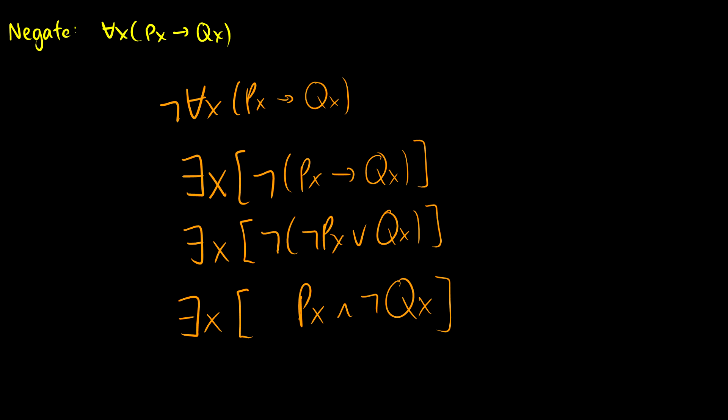So for instance: for all x, if x is an integer, then 2x is even. If I want to negate that — 'not for all x, if x is an integer, then 2x is even' — that's the same as saying there is some x such that x is an integer but 2x is not even. That English translation helps you understand the relation between these two.